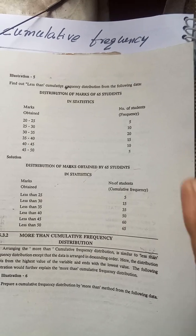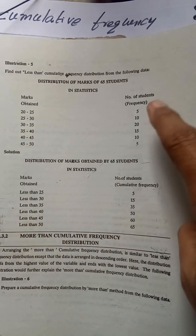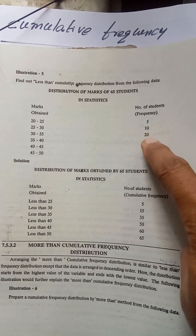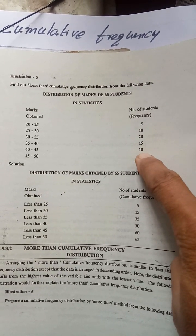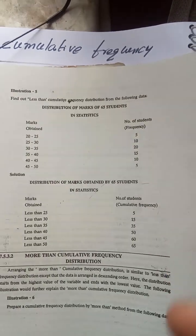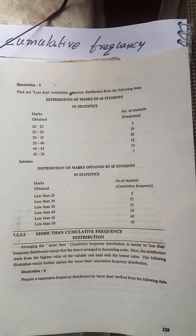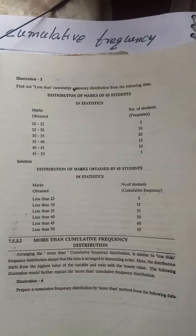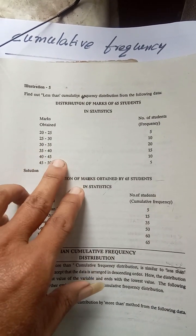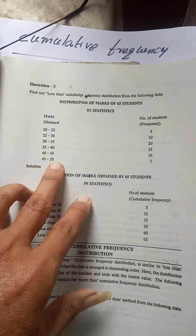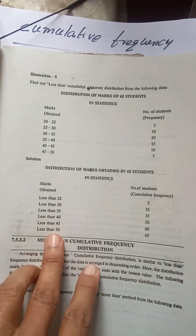Let's say this cumulative frequency is 5, 5 plus 10 equals 15, 15 plus 20 equals 35, 35 plus 15 equals 50, 50 plus 10 equals 60, 60 plus 5 equals 65. Now for less than values: less than 25, less than 30, less than 35, less than 40, less than 45, less than 50. This is the last column.